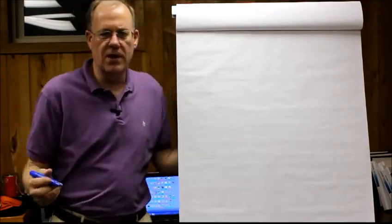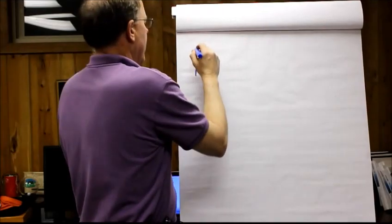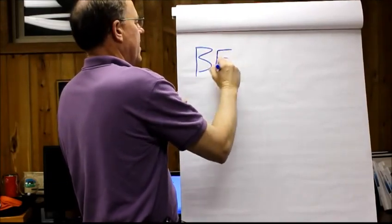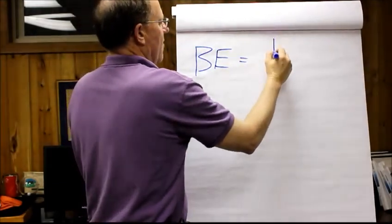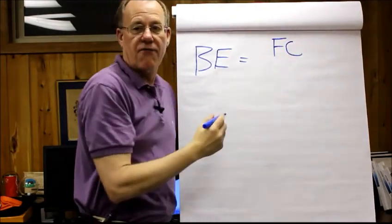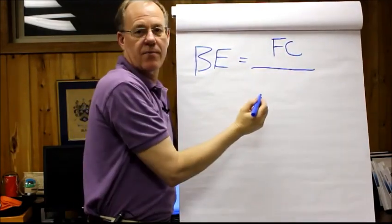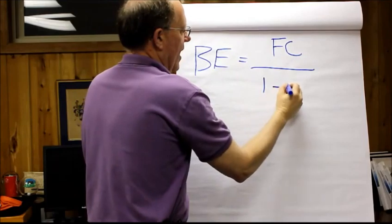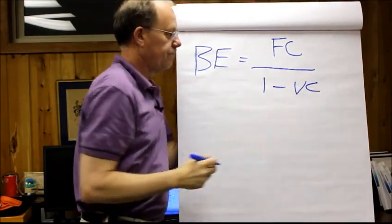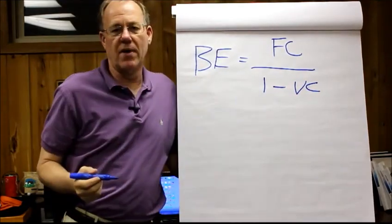So the formula is very simple. It's break even, so BE stands for break even, equals our fixed cost divided by one minus our variable cost. So fixed cost divided by one minus our variable cost.